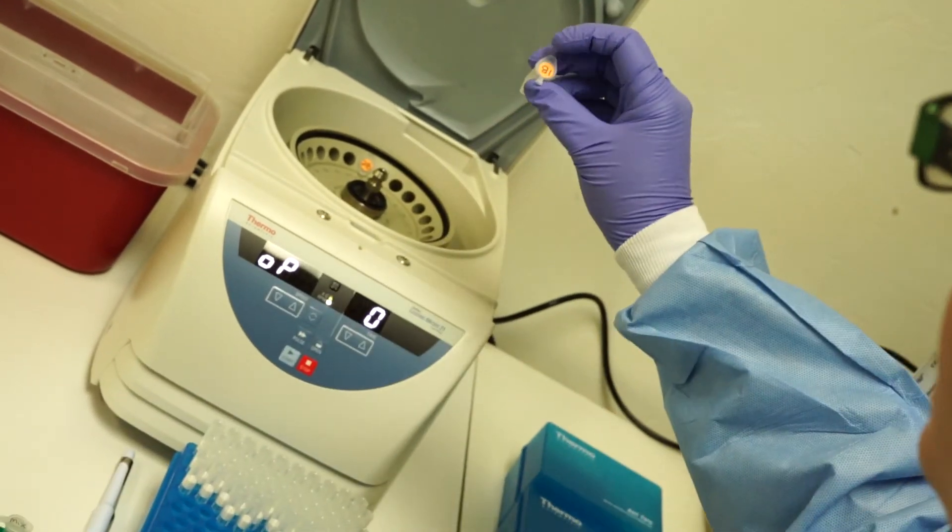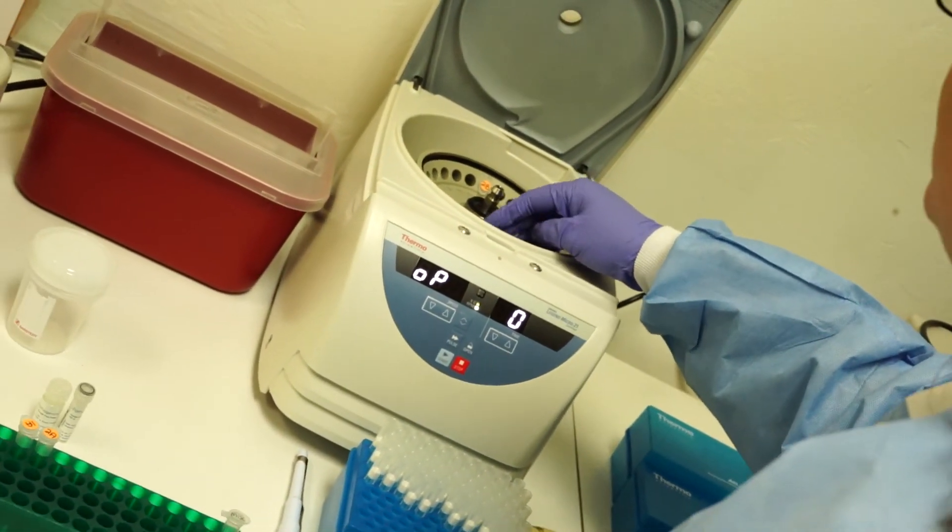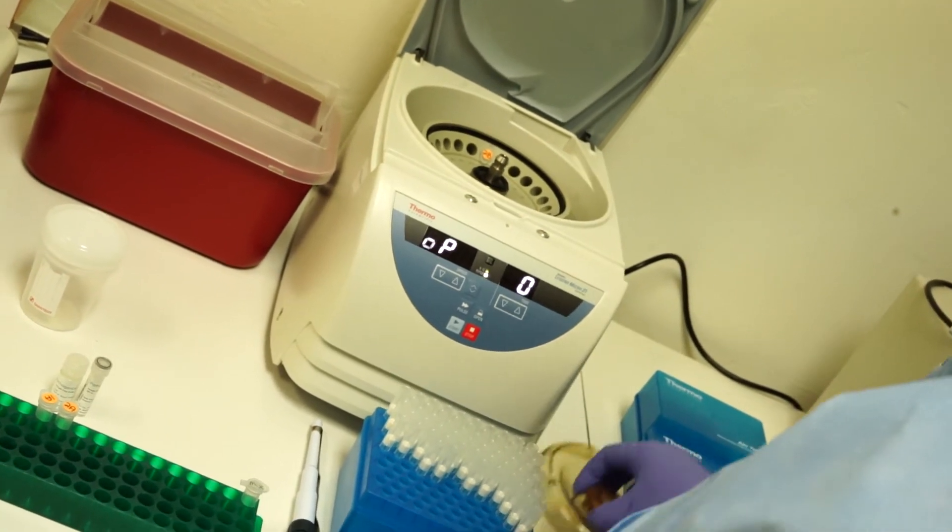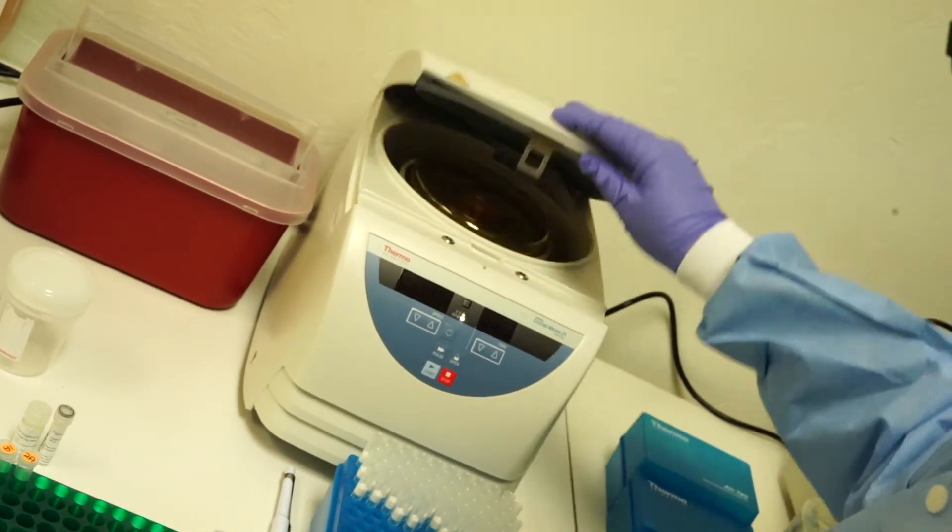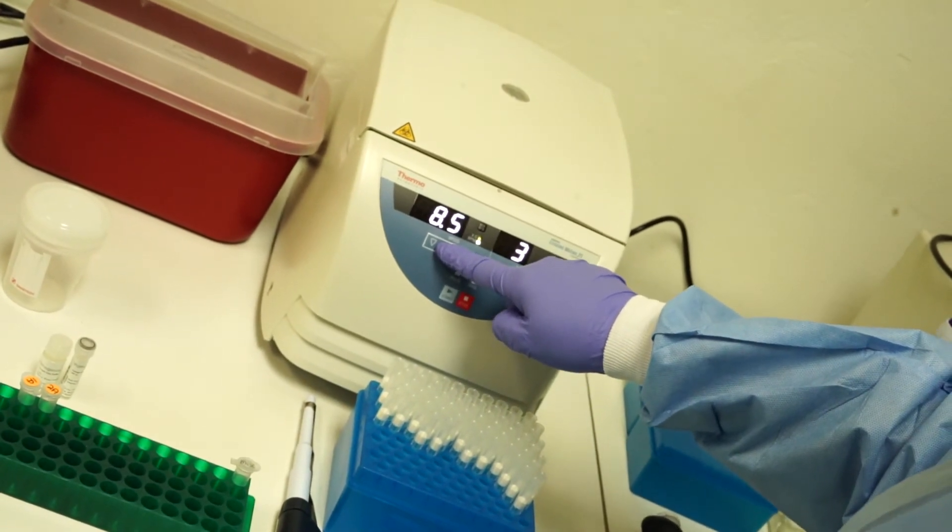Again, make sure to orient your tubes in the same direction so you will know where the pellet should be in the tube. Make sure the samples are balanced and set your centrifuge to 14,000 rpm for 3 minutes.